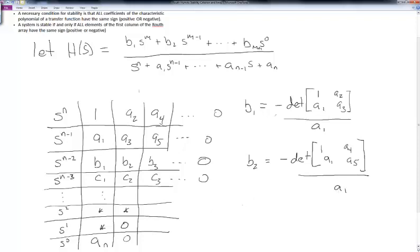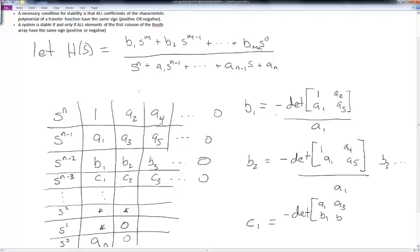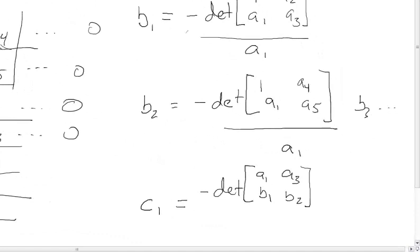We keep going — for b3 and beyond we use the same process: take the first column and the column after the current element, then divide by a1. For c1, we follow the same pattern: take the negative determinant using the first column above c1 (a1 and b1) and the column after c1 (a3 and b2), then divide by the element directly above c1 in the first column, which is b1.